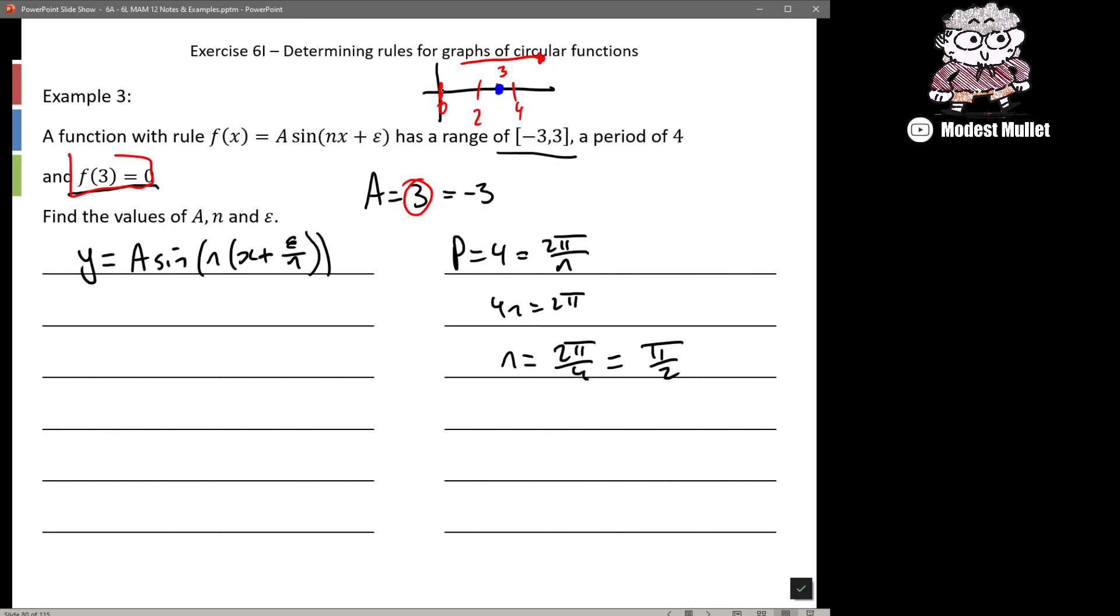The other thing we could have though is a could be negative, like that. And same thing, we could still move it to the right and f(3) would be equal to 0. We could also even move the graph to the left and still get f(3) equal to 0. And that's because of the repeating nature of sine and cos graphs. So there's heaps of solutions to this that can make it work.